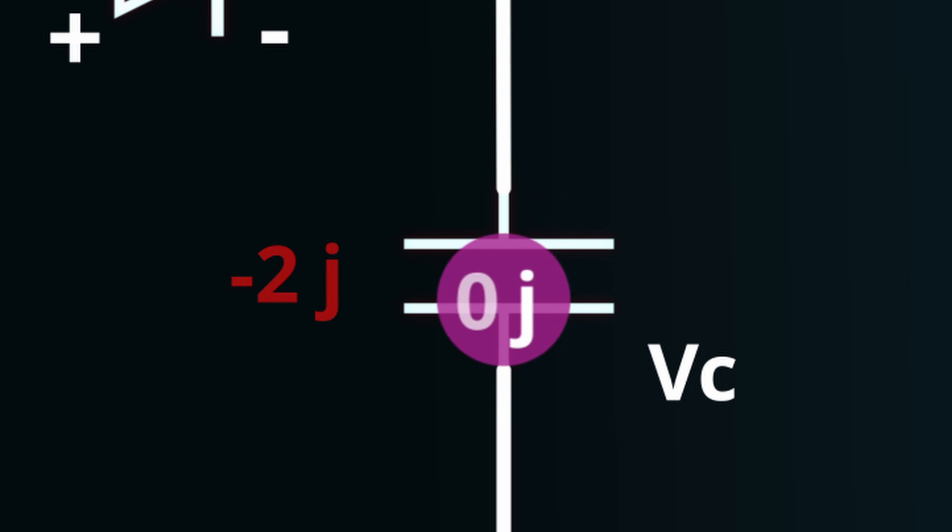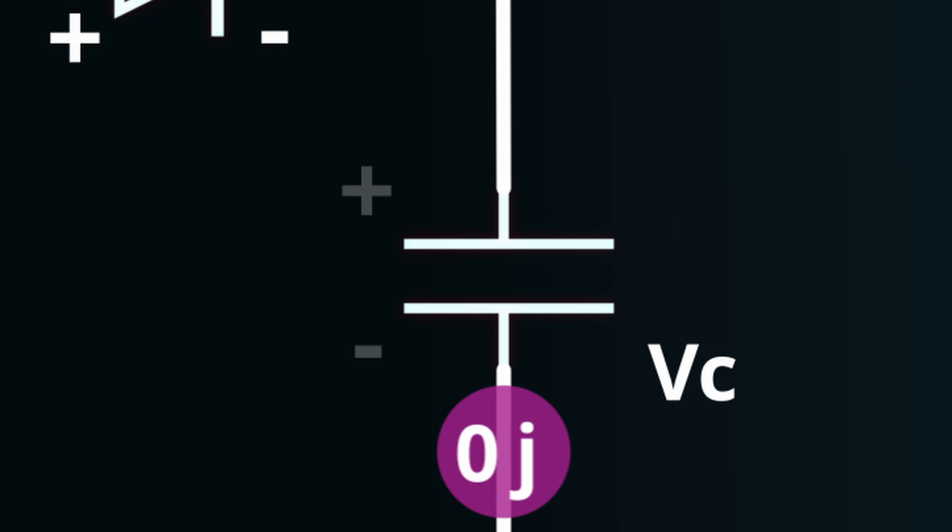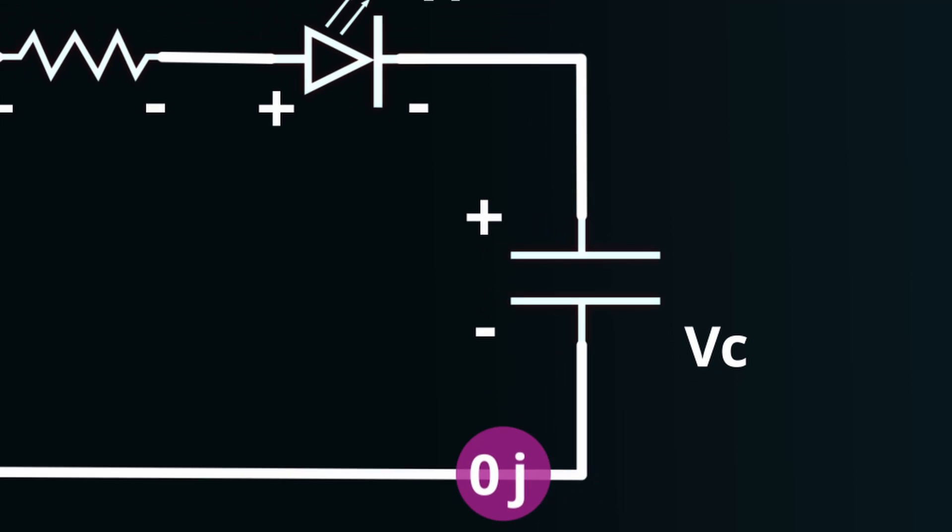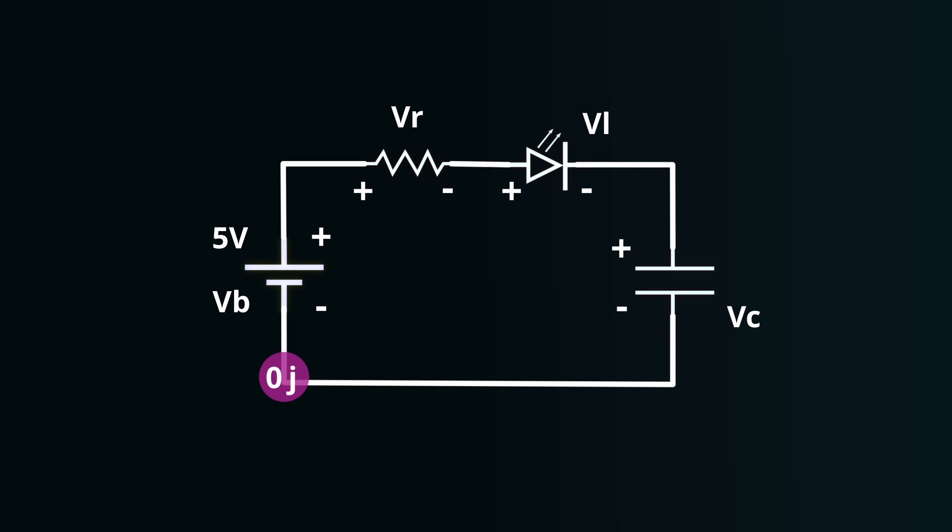Similarly, as it passes through the capacitor, further energy is spent. By the time our charge completes its loop and returns to the battery, it will have exhausted the entire 5 joules of energy it initially gained. This means that the sum of all the voltage drops across the components equals the original 5 volts from the battery, making the net sum zero, in accordance with Kirchhoff's voltage law.